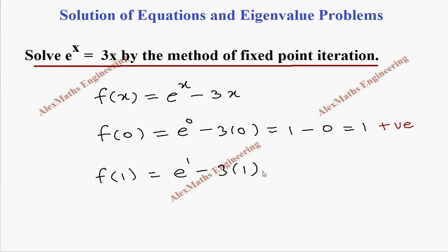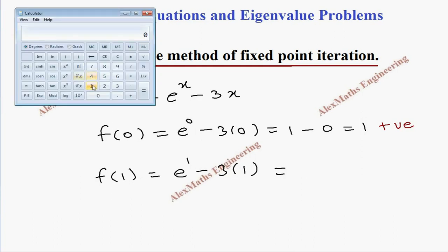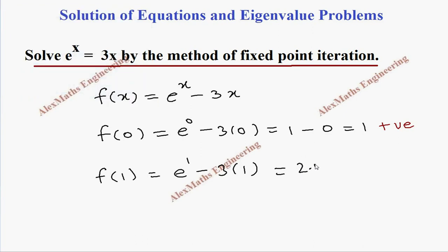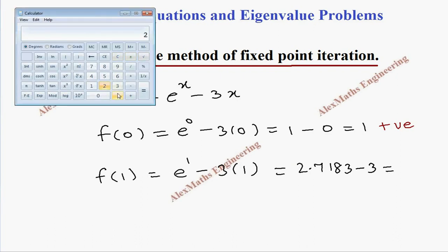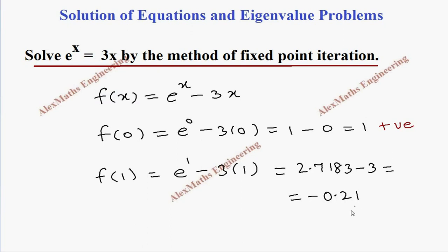f(1) = e^1 - 3×1. The value of e^1 is 2.7183, so 2.7183 - 3 = -0.2817, which is a negative value. So we found two values of x where f(x) changes its sign.